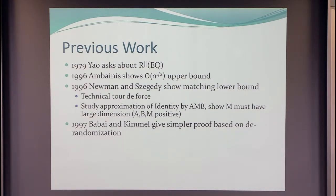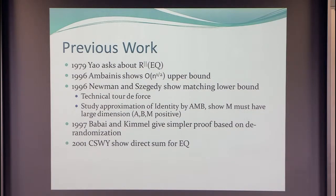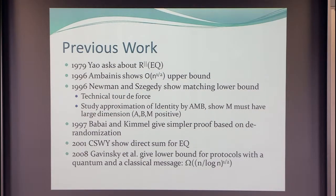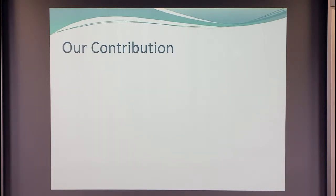Bougain and Wiktorsen essentially had the same idea, also in 2001. Chakrabati et al., in one of those seminal information complexity papers, showed the direct sum result in the same model. And in 2008, Gawinski, Odette-Regev, and Ronald de Wolf looked at the case where you have one quantum message and one classical message — Alice's quantum, Bob's classical — and then you have a square root n bound with a loss of a log factor. So it's a long history.